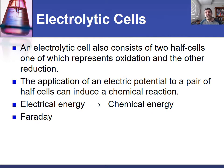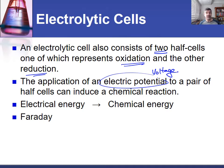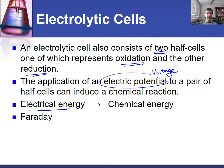An electrolytic cell is the reverse of a galvanic cell. In an electrolytic cell we still have two half-cells, we still have an oxidation and a reduction occurring. But in this case it's the application of an electric potential — a voltage applied to a pair of half-cells — that induces a chemical reaction. This is the reverse of what happens in a galvanic cell: electrical energy is the input and a chemical reaction is the output.